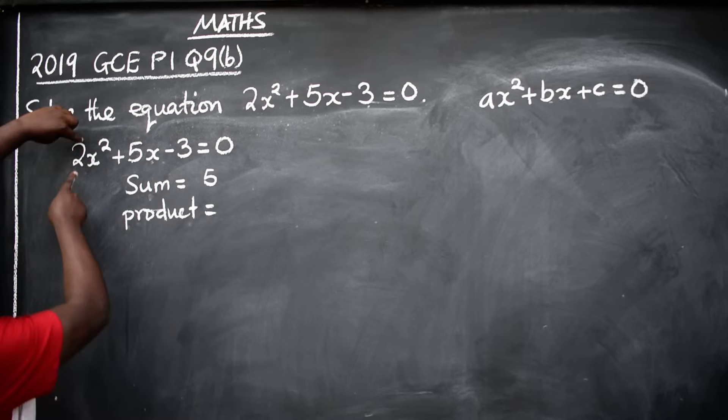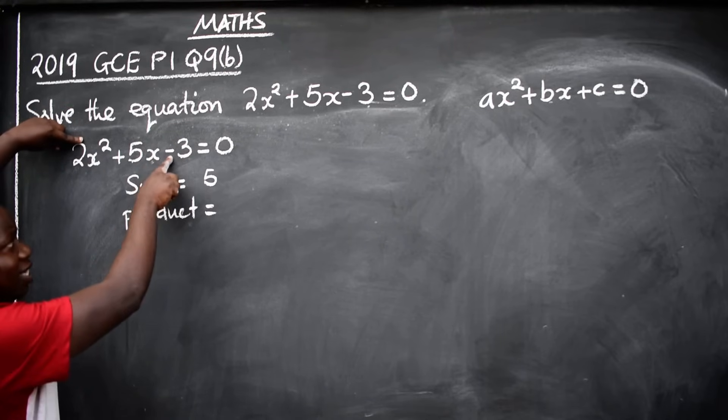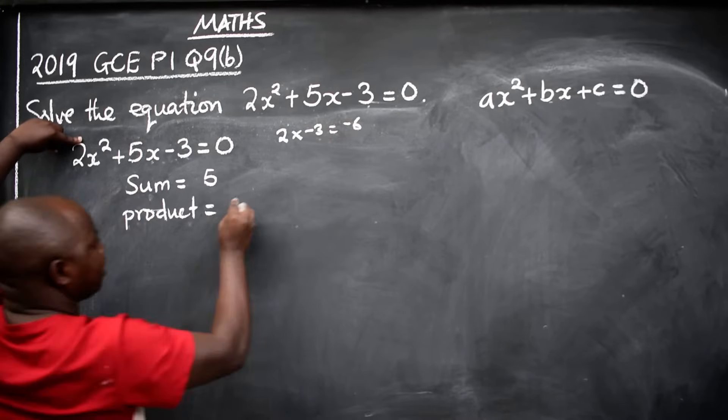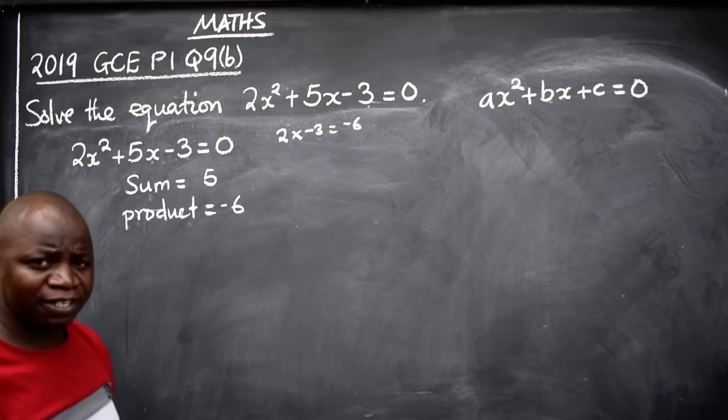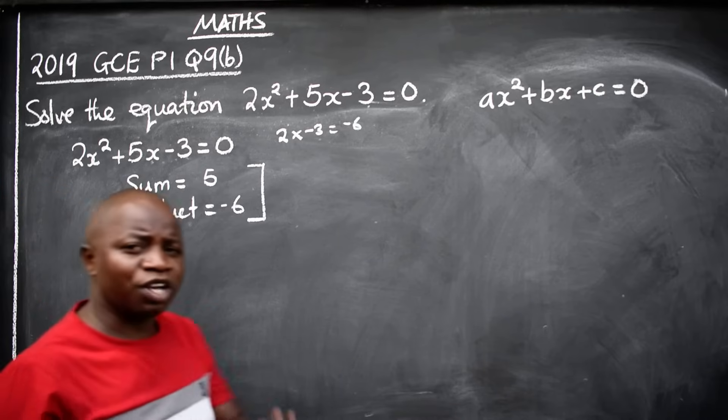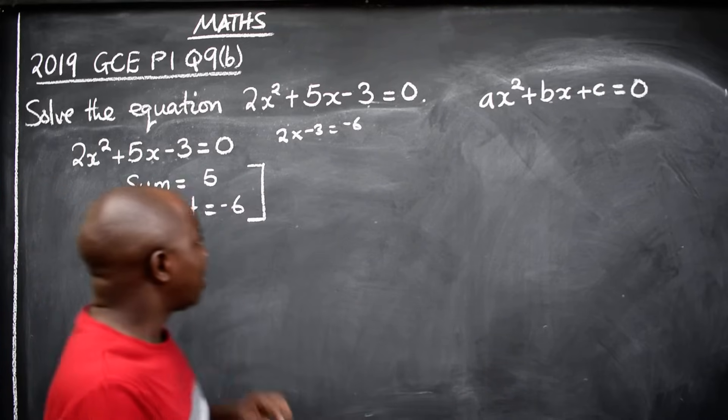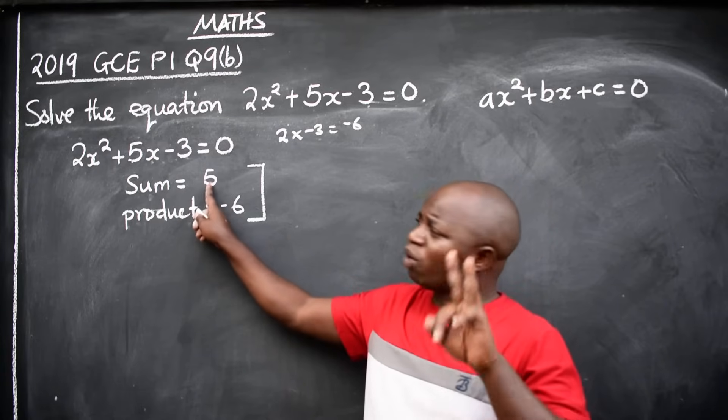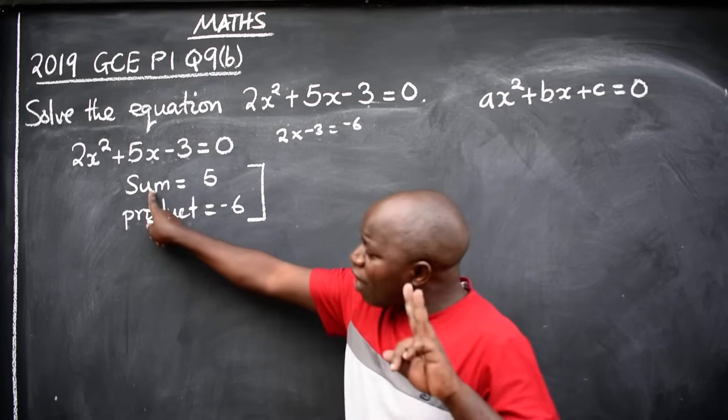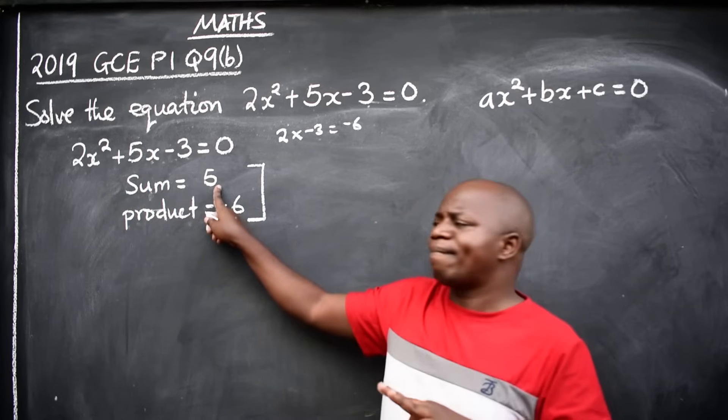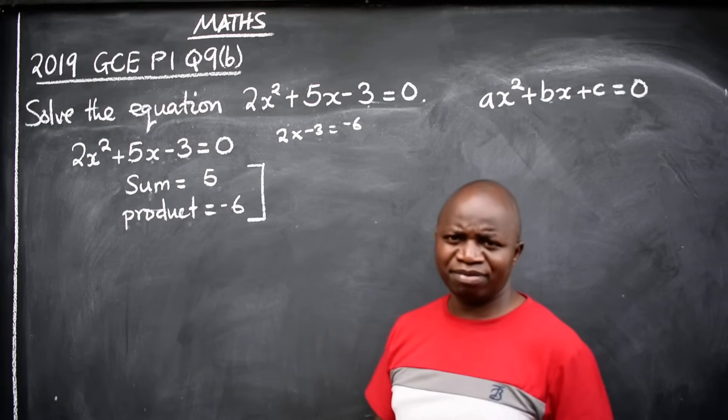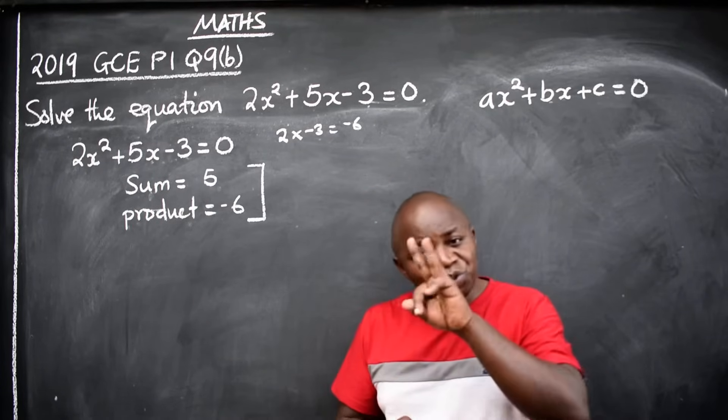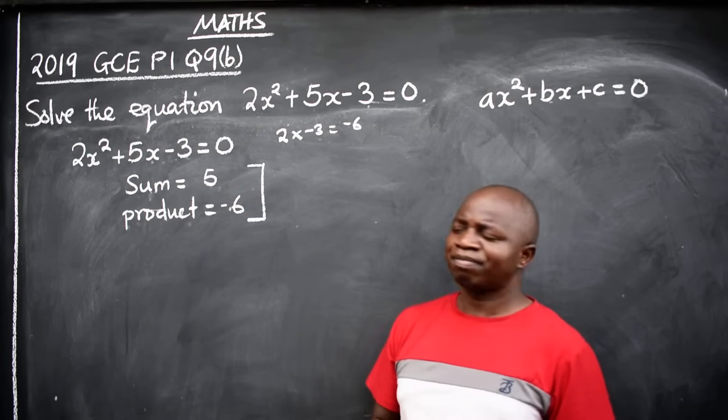So the product is -6. Now you are going to look for two factors. The two factors must be identified this way: you have to look for two numbers. When you add them, they should give you 5. The same two numbers, when you multiply them, they should give you -6. What are the two numbers? They should meet this condition.